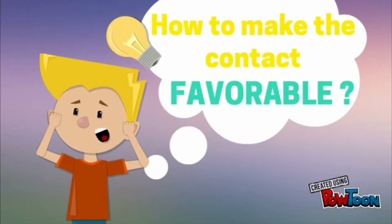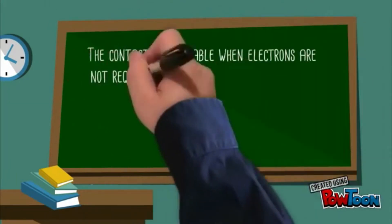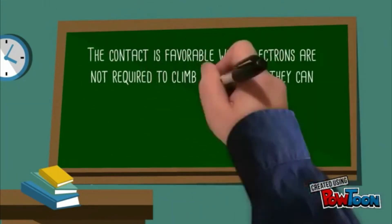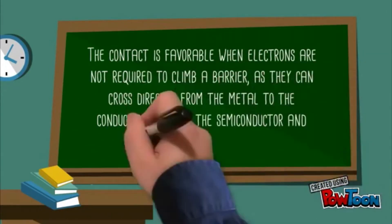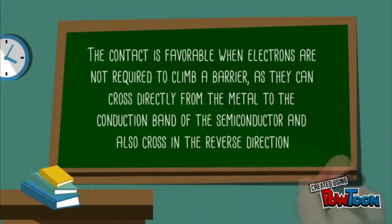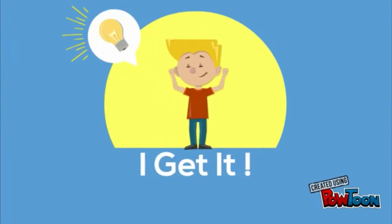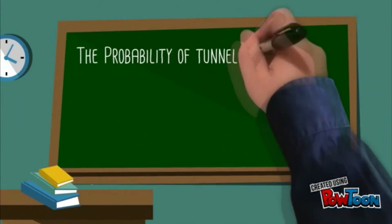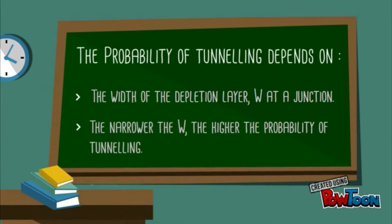How to make the contact favorable? The contact is favorable when electrons are not required to climb a barrier, as they can cross directly from the metal to the conduction band of the semiconductor and also in the reverse direction. The probability of tunneling depends on the width of the depletion layer W at the junction, and the narrower the W, the higher the probability of tunneling.